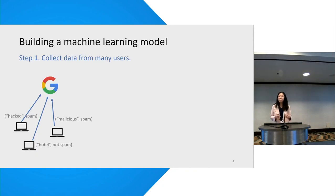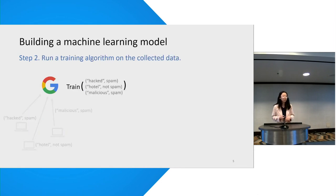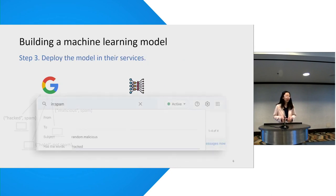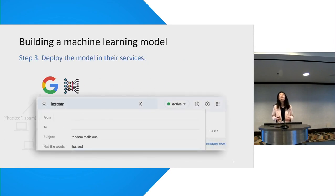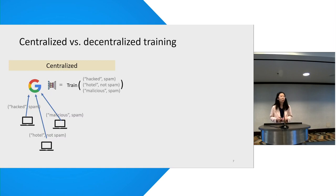The process of building a model is conceptually very simple. First, a central server will collect data from user devices. Then it runs a machine learning algorithm on the collected data to train a model. After the training, the model is deployed in an app for services. But as you can see here, to train a model, the server has to collect thousands of users' data. And this is so-called centralized training.